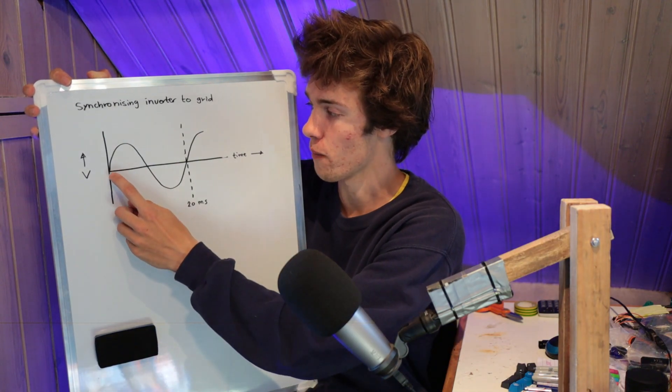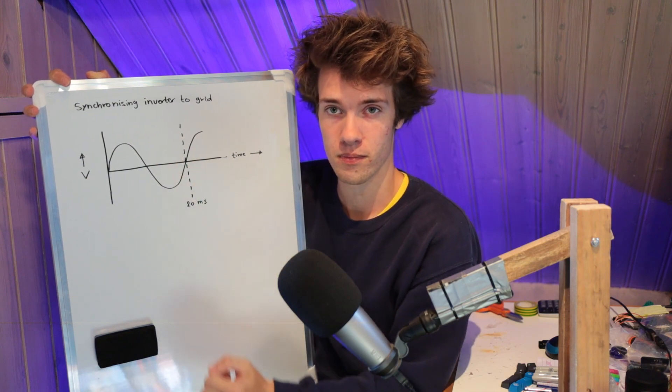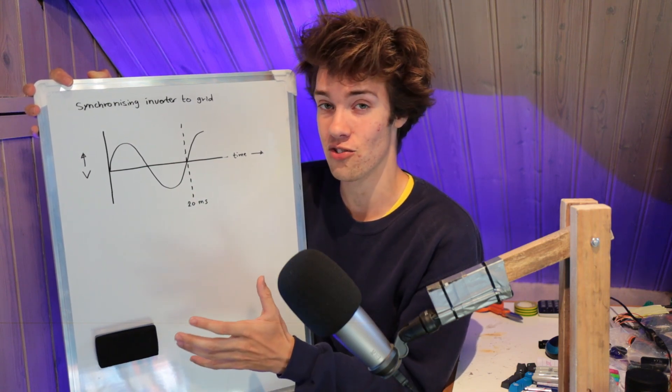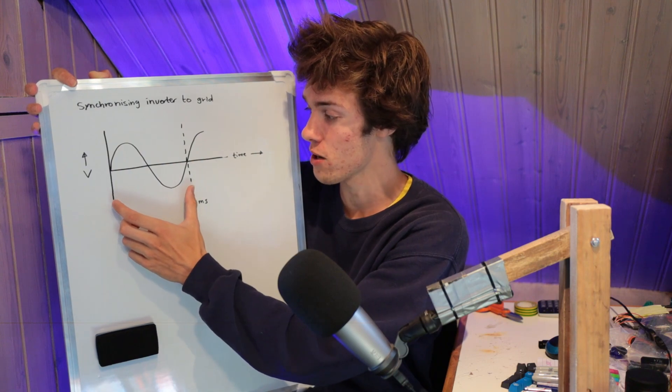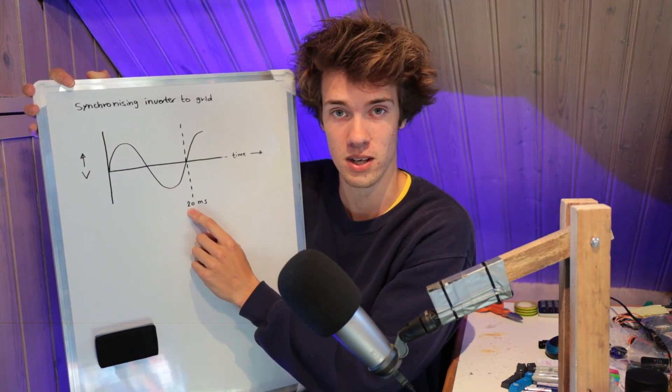As you can see, the voltage on the power grid constantly goes up and down like this, and here in Europe, it does that 50 times in one second, which means one of these periods, one of these up-and-down cycles, takes 20 milliseconds.